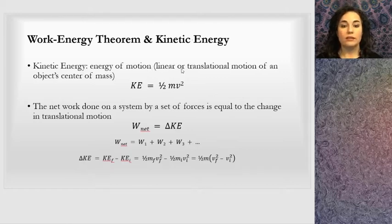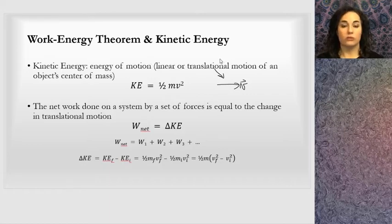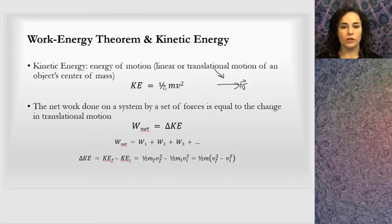Kinetic energy may be linear or translational motion, where we have a velocity vector in a straight direction — that's translational motion. There is also rotational kinetic energy, which has to do with rotational motion, and that's for a future lesson. Regular translational kinetic energy is one-half times the mass times the velocity squared.